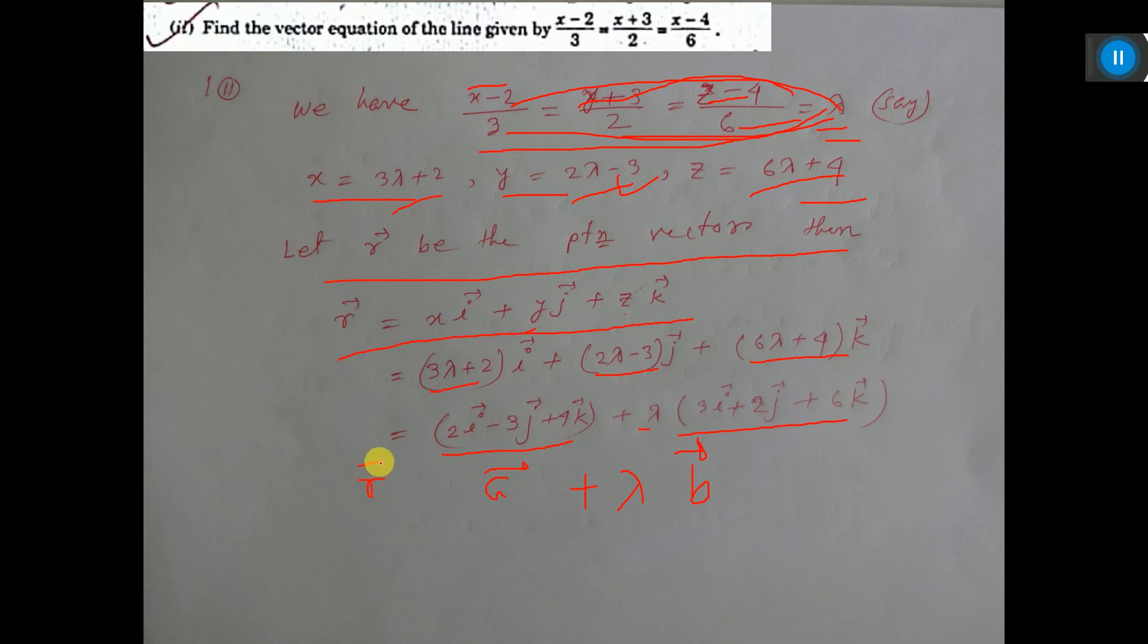This is r vector. So r vector equals a plus lambda b. That is the vector equation, where a equals this vector and b equals this vector. So I think you have learned this sum.